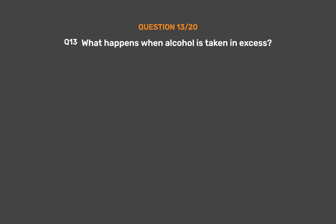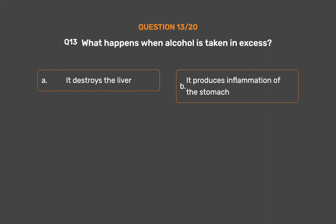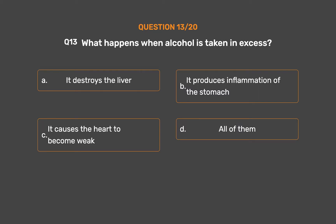Question number 13. What happens when alcohol is taken in excess? Option A: It destroys the liver. Option B: It produces inflammation of the stomach. Option C: It causes the heart to become weak. Option D: All of them. The correct answer is Option D, all of them.